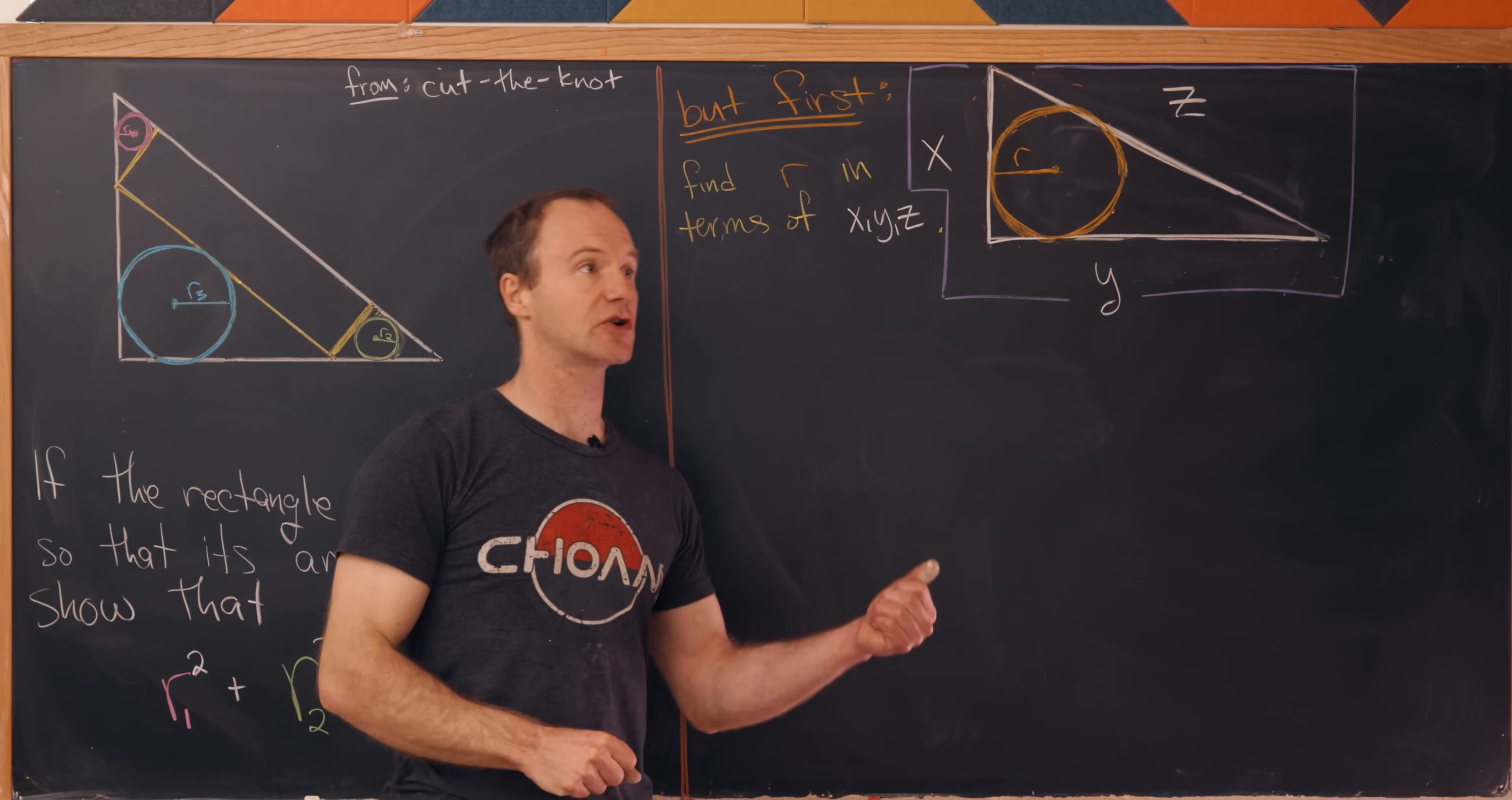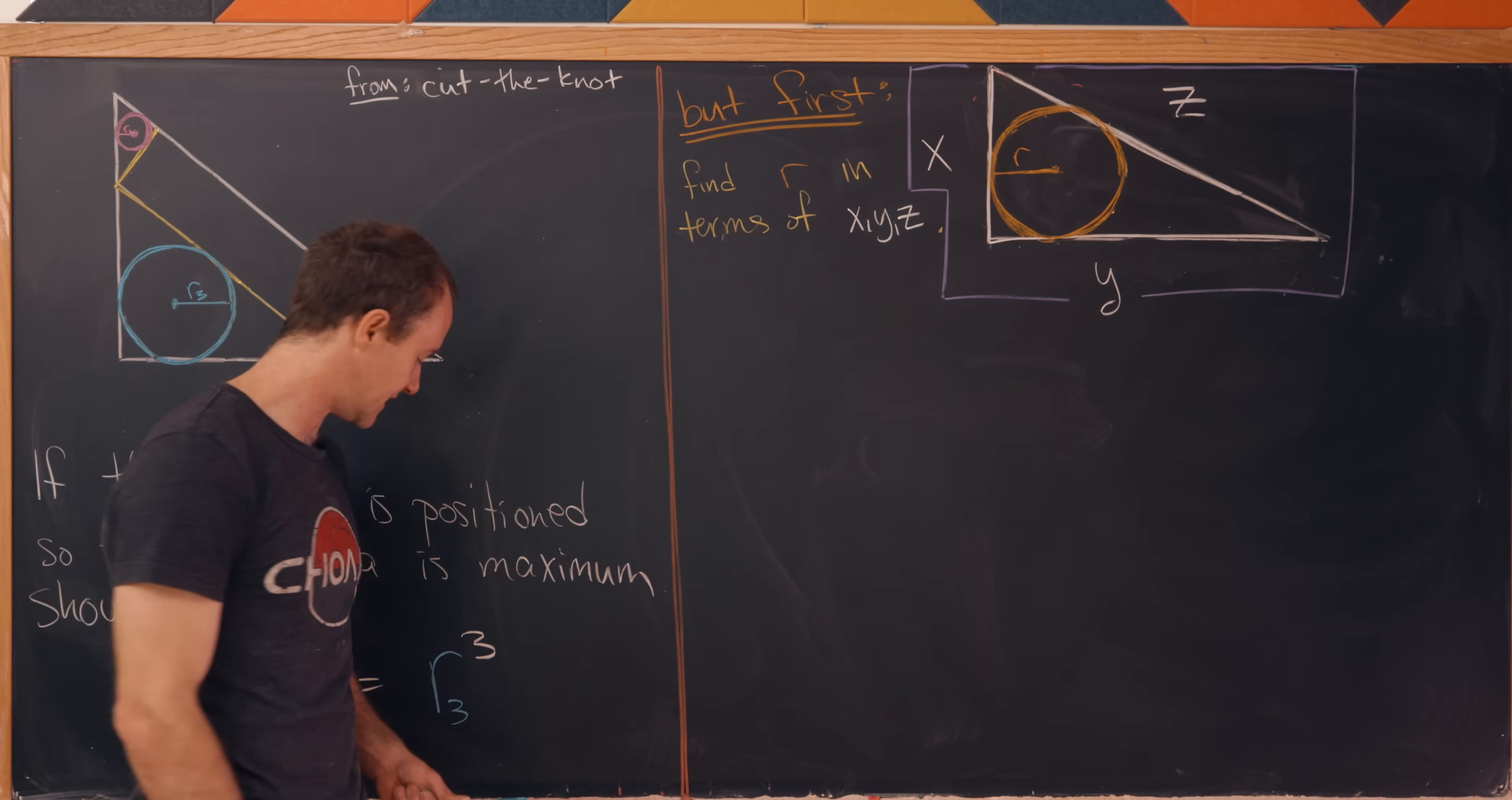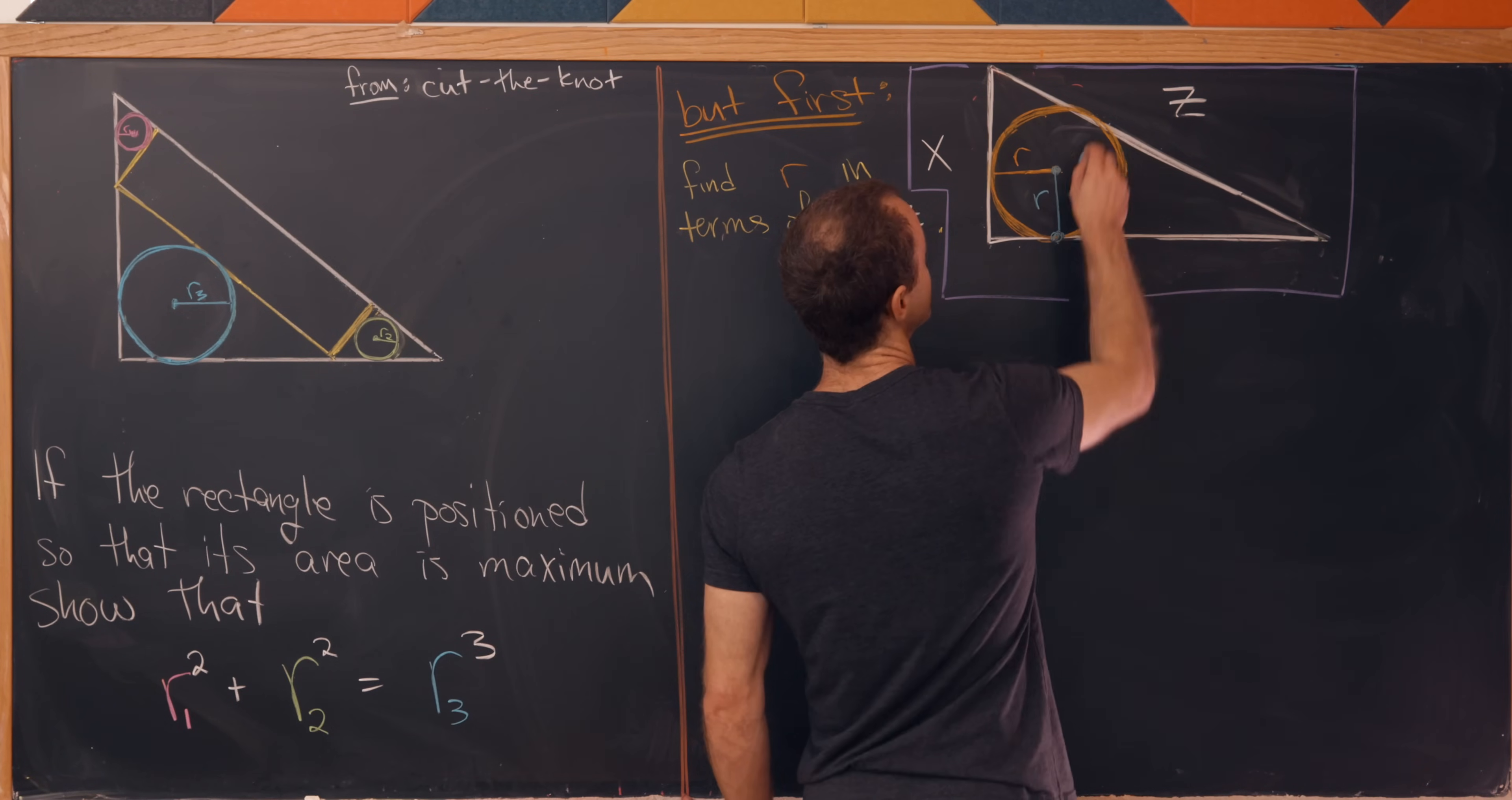We've got circles inscribed inside of right triangles, which motivates the following classic result which we will need. If you've simply got a right triangle with side lengths x, y, and z and a circle inscribed inside, can we find r in terms of x, y, and z? Our method will be to break this triangle into a couple of sub-triangles. We're going to start by taking a line segment from the center of the circle down to where the circle and the triangle intersect. This also has length r because that's a radius of the circle. Then we're going to do the same thing up in this direction, with radius r as well.